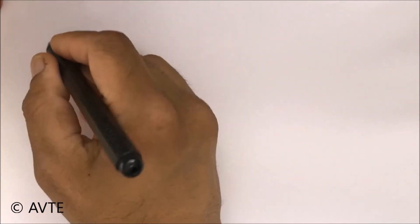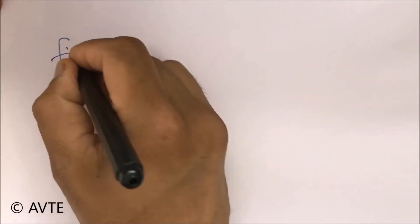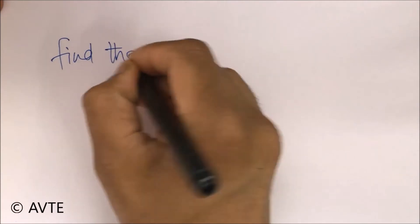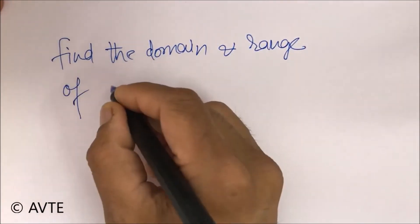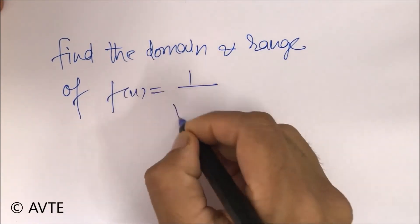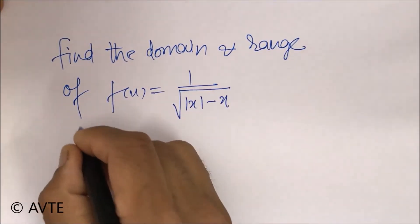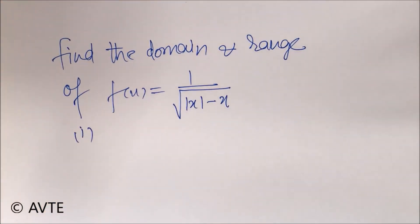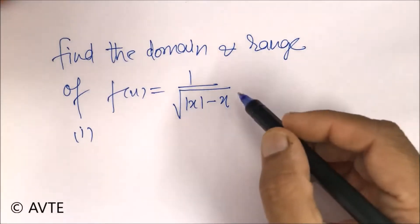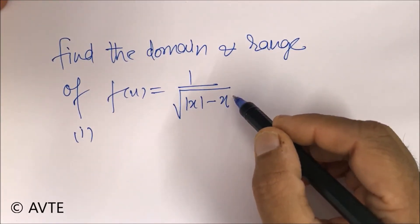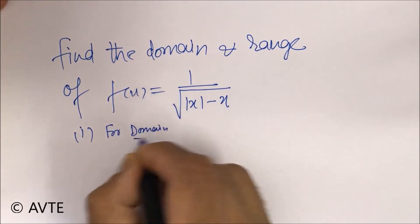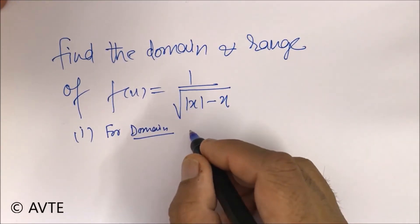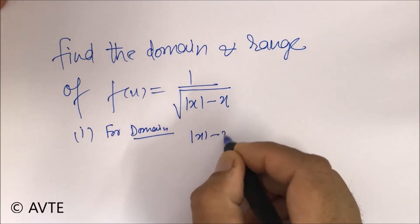Hello students, welcome to another question on domain and range. f(x) is equal to 1 upon under root of mod x minus 1. We know that this is a square root in the denominator, so for domain, the term inside the square root has to be purely positive.